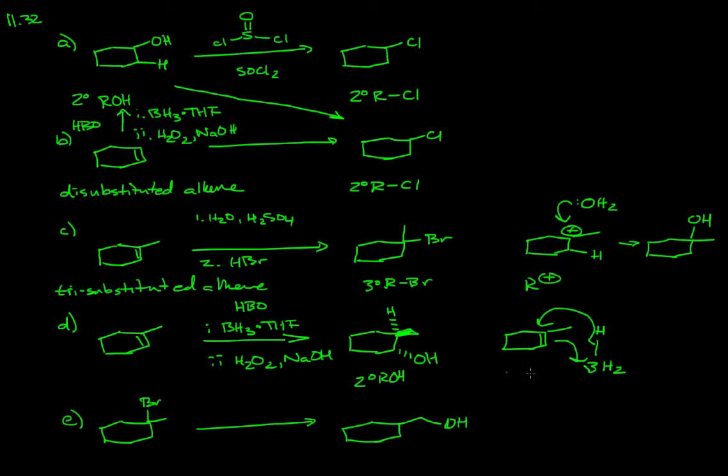In our final problem, part E, we're taking a tertiary bromide which we've seen from the product of part C already, and we're making a primary alcohol. You can see that this is not a simple substitution, and it couldn't be an SN2 case anyway because we have a tertiary carbon and that's not a good substrate for substitution in the SN2 fashion.